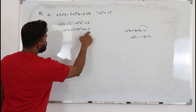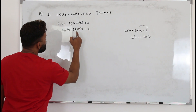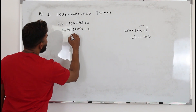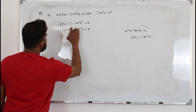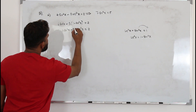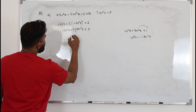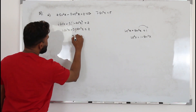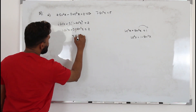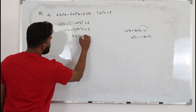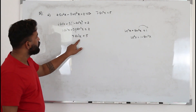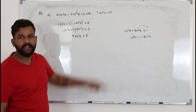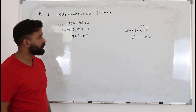Bringing −3 to the right side and combining: 4 + 3 = 7, so 7sin²x = 5. That's the answer for part A.